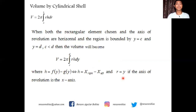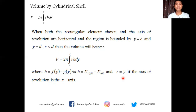Similarly, when both the rectangular element chosen and the axis of revolution are horizontal, and the region is bounded by two curves f(y) and g(y) between two horizontal lines y = c and y = d where c < d, the volume becomes V = 2π times the integral of r·h dy from c to d, where h = x_right − x_left, and r = y if the axis of revolution is the x-axis.